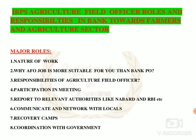Point number four is participation in meetings. Under this point, you have to meet with the district manager for implementation of district credit plans. There are various schemes running in various states that you need to look after. Point number five is reporting to relevant authorities like NABARD and RBI. Agriculture Field Officers must maintain regular contact with senior authorities in their bank and report to government organizations like NABARD and RBI.